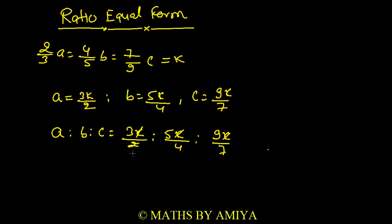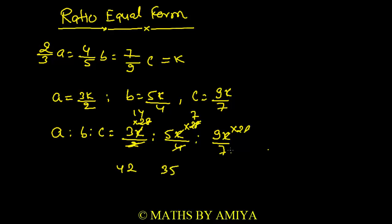According to the integral form, we don't want anything in the denominator — denominator should be 1. So we take the LCM of 2, 4, 7 which is 28, and multiply in the numerator. That gives us 42, 35, and 36. So this is our integral form derived from the equal form.